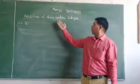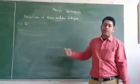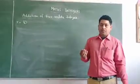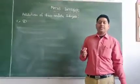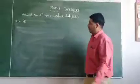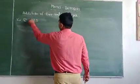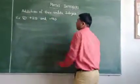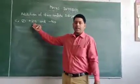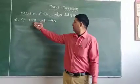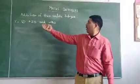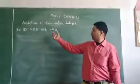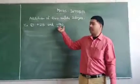The second part is addition of two unlike integers. Unlike integers means one integer is positive and the other is negative. So we have to check which integer is greater. For example, we have to add plus 25 and minus 40. These are different integers because one is positive and the other is negative — they are called unlike integers.